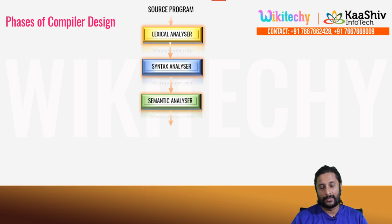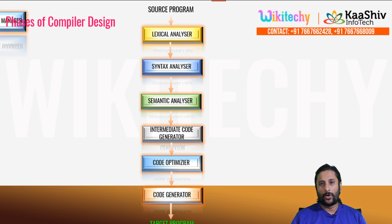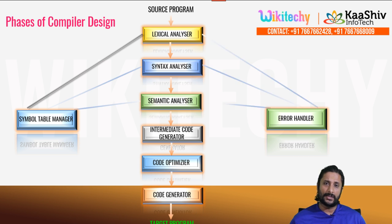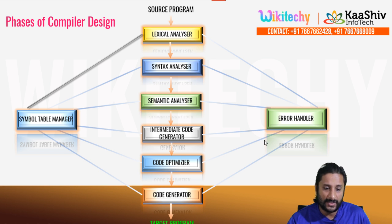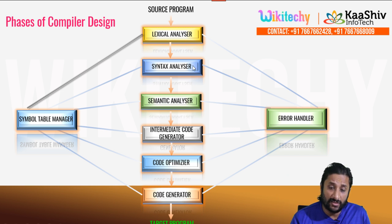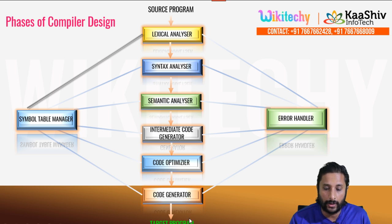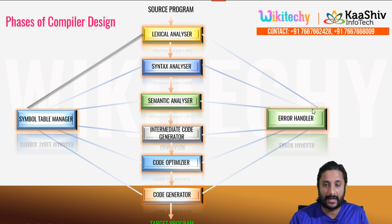Compiler design is the process of converting high-level language (e.g., int a = 10) into executable machine code. The phases are: lexical analysis (tokenizing), syntax analysis (checking grammar), semantic analysis (checking meaning), intermediate code generation, code optimization, and final code generation. All information is stored in the symbol table manager and errors are handled by the error handler. These are called the phases of a compiler.